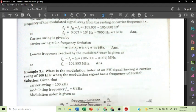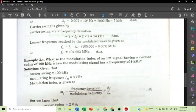Now we will discuss the next numerical. What is the modulation index of an FM signal having a carrier swing of 100 kHz when the modulating signal has a frequency of 8 kHz? Now here the given data is: